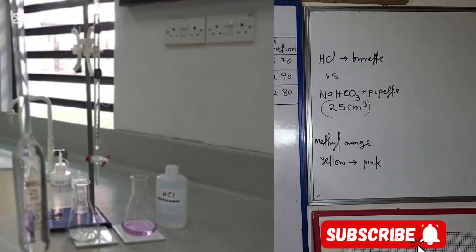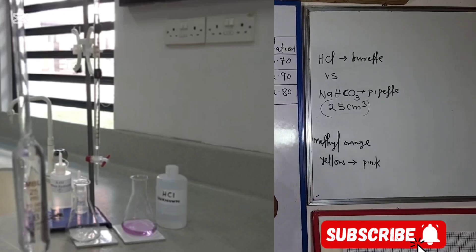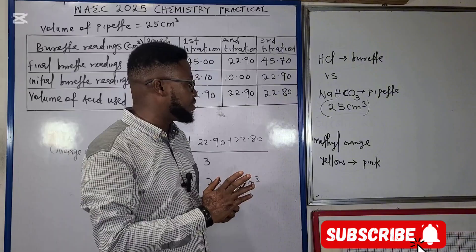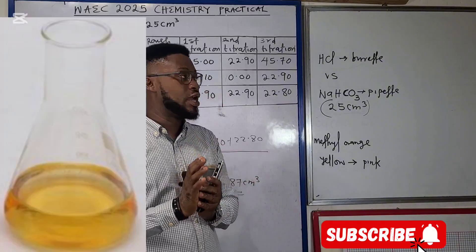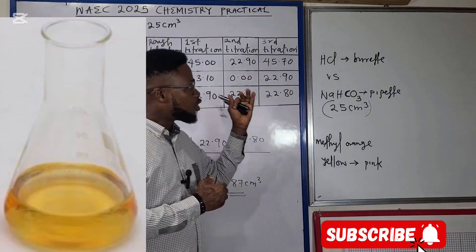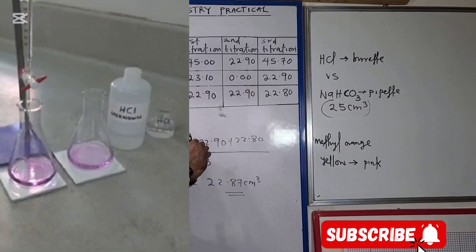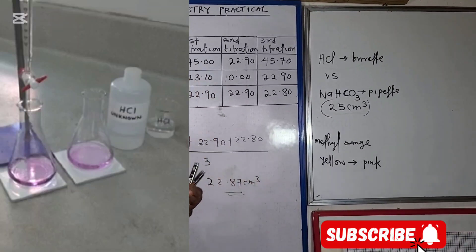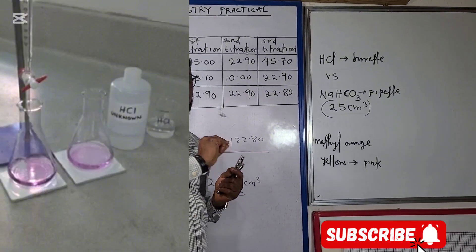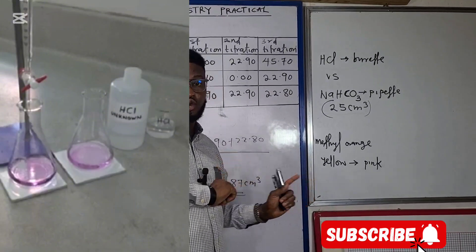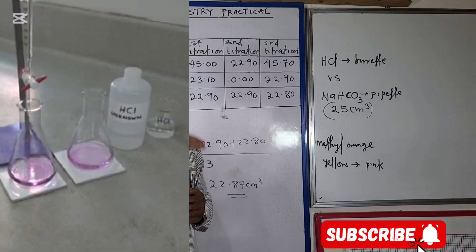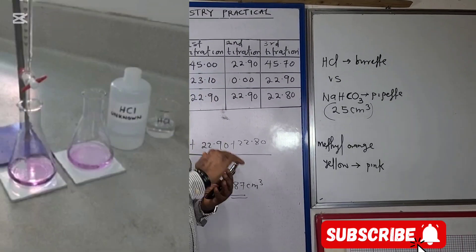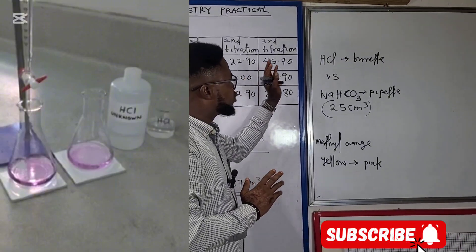We pipette 25 cm³ of sodium hydrogen carbonate into a conical flask and add two or three drops of methyl orange. The moment you add methyl orange to the sodium hydrogen carbonate, the colour will be yellow. We then run the dilute hydrochloric acid from the burette. At the endpoint, there is a colour change from yellow to pink, at which point you stop and record the volume of acid used.